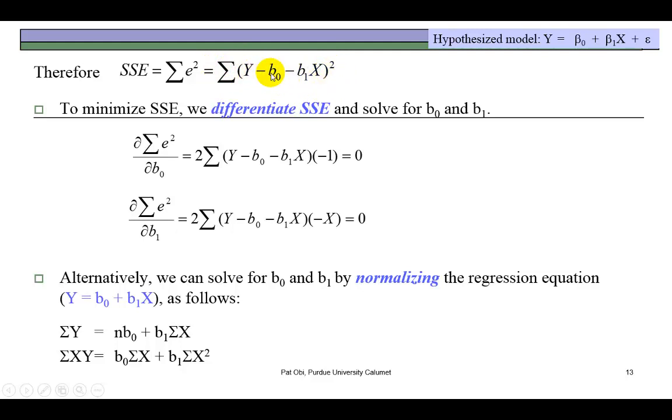To minimize it, we're going to differentiate this error equation with respect to each of the estimators, b₀ and b₁. In the case of b₀, we differentiate this function with respect to b₀, set it equal to zero and then solve for b₀, and do the same for b₁. This process in calculus is optimization, a process of finding the minimum or the maximum of a function.